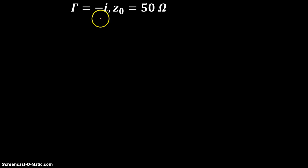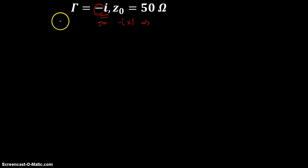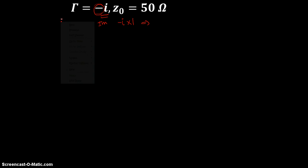Another example. What is this? Gamma is equal to minus i means it is completely imaginary. There is no real part involved in it and the value being minus i means it is minus i times 1. So from 0, you have to go down minus 1.